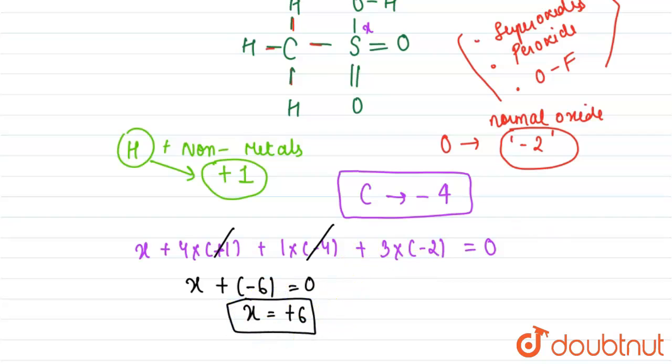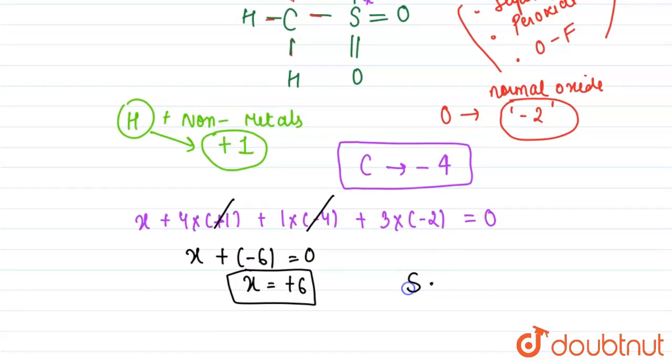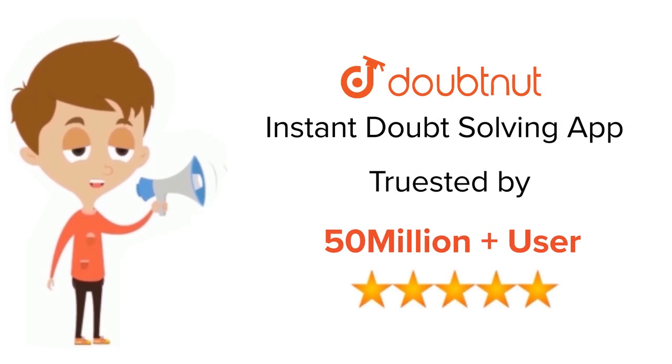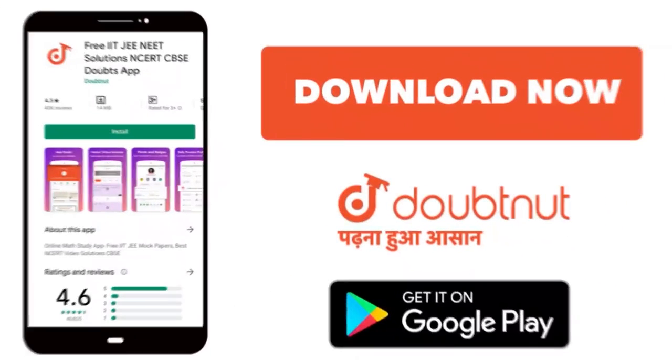As we can see, the sulfur oxidation state will be plus six. Hence we have calculated oxidation state of each and every atom in the molecule of methyl sulfonic acid. For class 6 to 12, IIT-JEE and NEET level, trusted by more than 5 crore students, download Doubtnet app today.